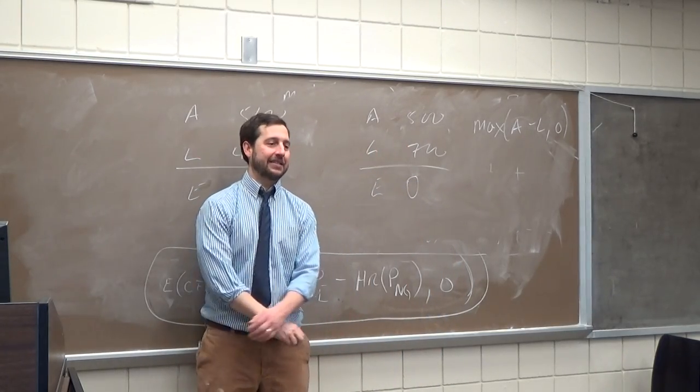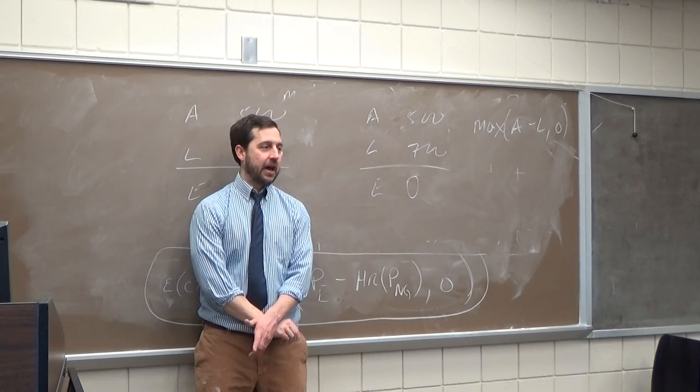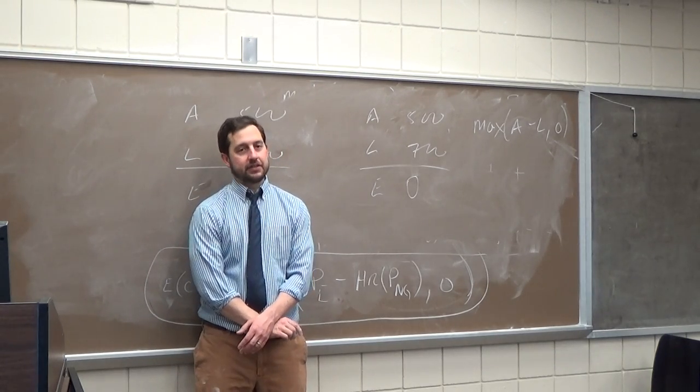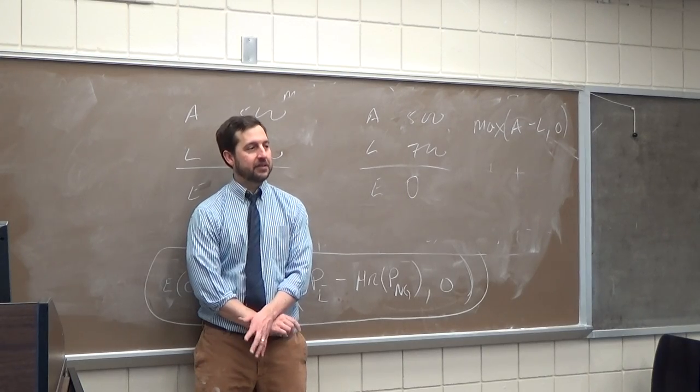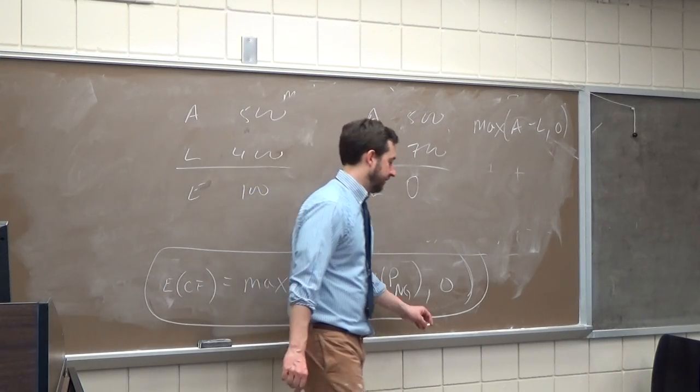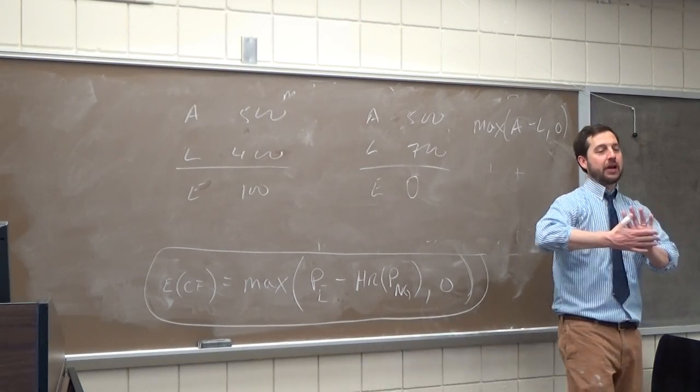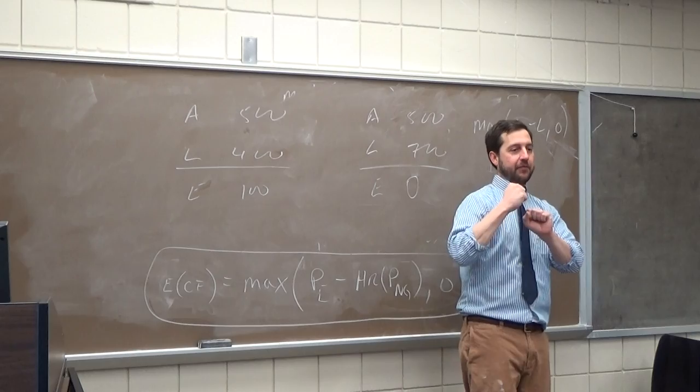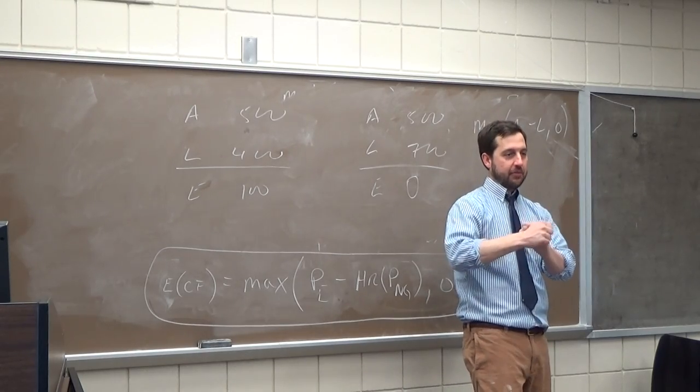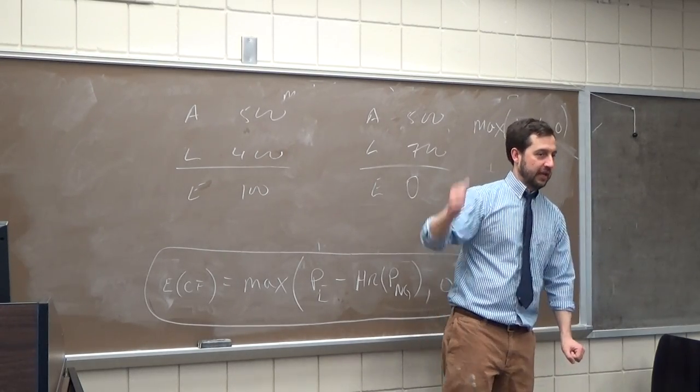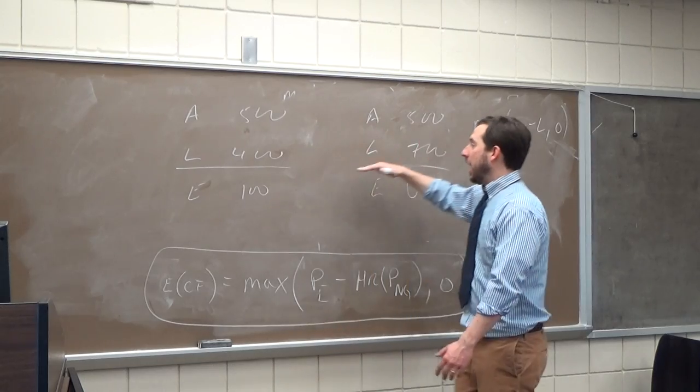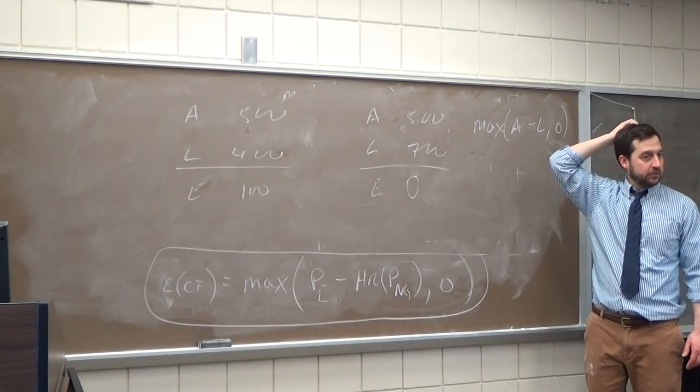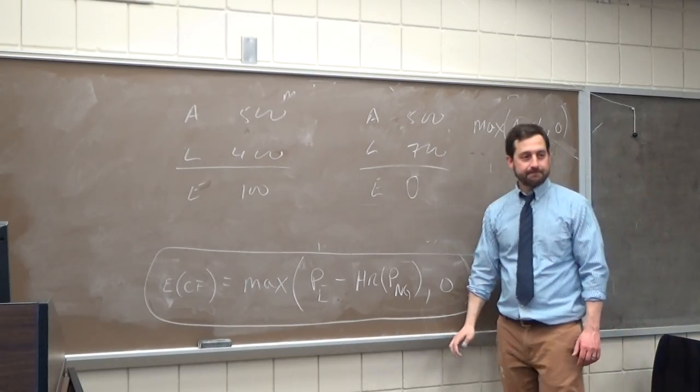So equity is actually an option. It's an option on the company's assets. So you can value, company's equity is an option on its assets, where the strike price is the liabilities. What is the strike price? It's the price at which I have the right to buy it. So when I say you pay me money for the right to buy Tesla at 200, the strike price is 200. So in other words, here the strike price would be the liability, 700. Does that make sense?